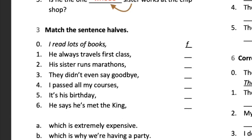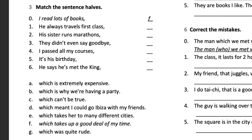Hello Jasmine, good afternoon. Help me out, please — I'm a little short with personnel. What we have to do here is connect the halves of these sentences to make a whole sentence. Number zero: 'I read lots of books, which takes up a good deal of my time.' Takes up means you're taking the time. I cross out letter F. Please help me with number one.